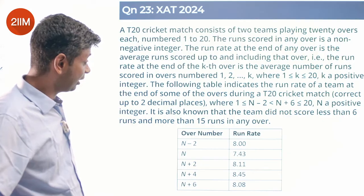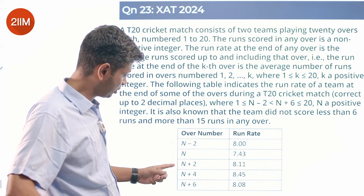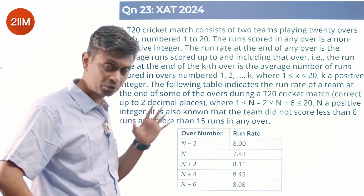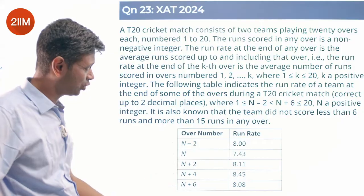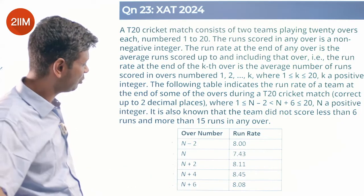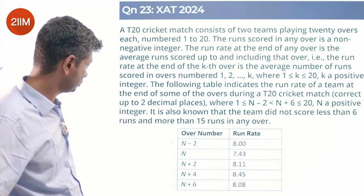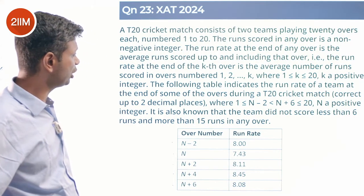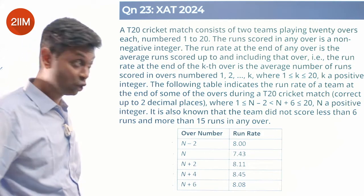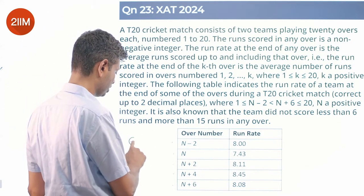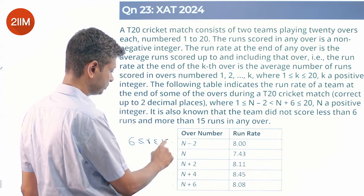The overs in question are n-2, n, n+2, n+4, and n+6, where 1 ≤ n-2 < n+6 ≤ 20, and each is a positive integer. It is also known that the team did not score less than 6 runs or more than 15 runs in any over — so 6 ≤ runs in an over ≤ 15.